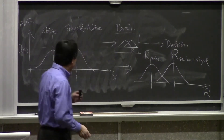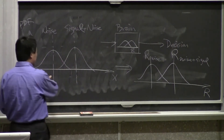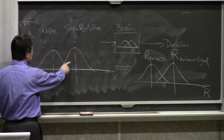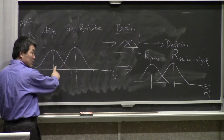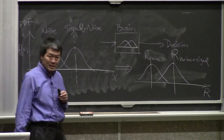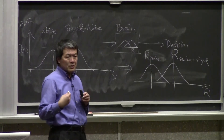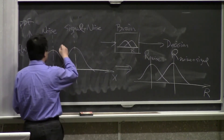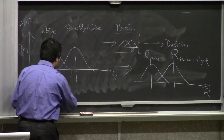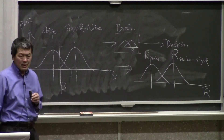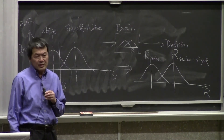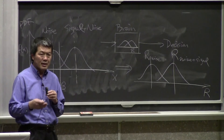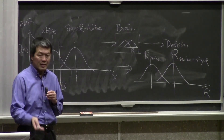The second point I want to clarify: once we have these two distributions — signal plus noise and noise alone — you make a decision on whether you see a signal or not.